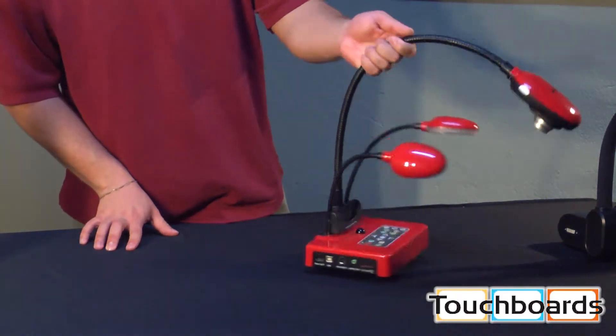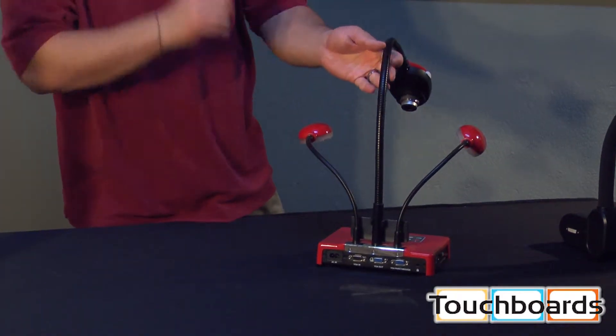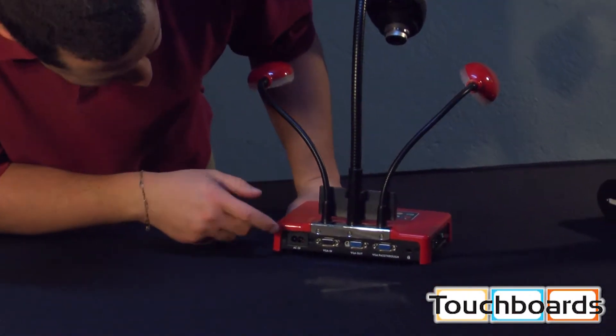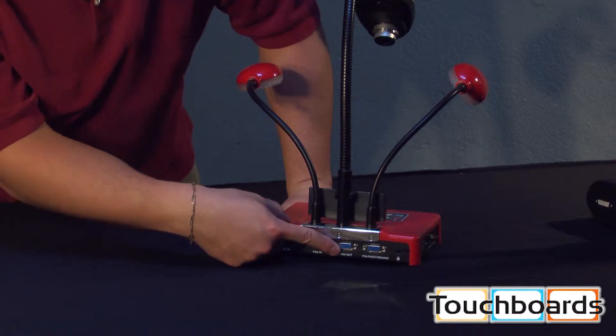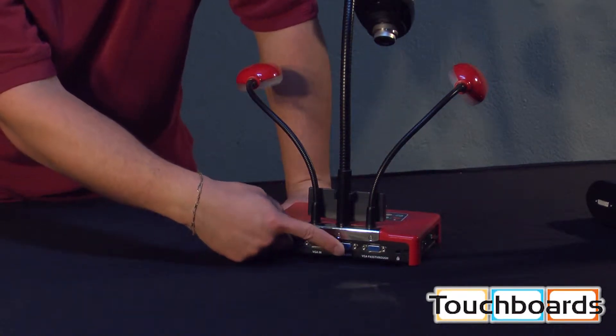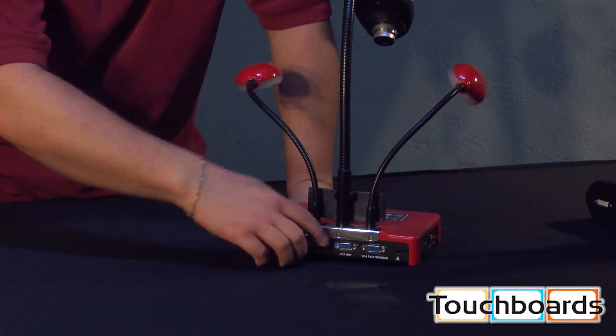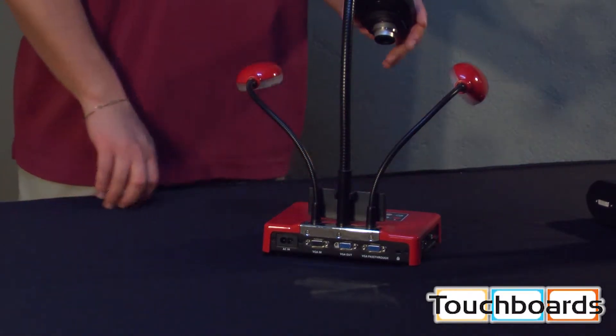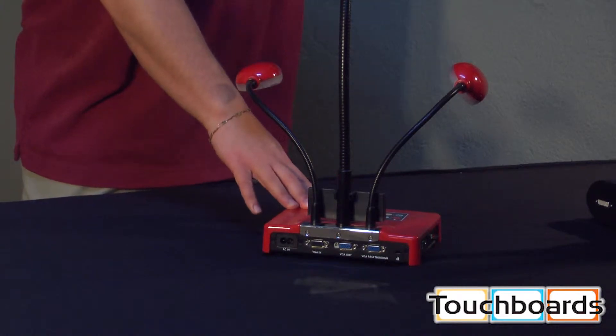Now, on the back side of the camera, most of them it'll be in the back, but it will vary by camera. You have to plug your VGA out. That's right there. You'll plug your cable into that. You'll go into your projector, maybe even a TV, and you're going to directly display the image that's coming from this camera.